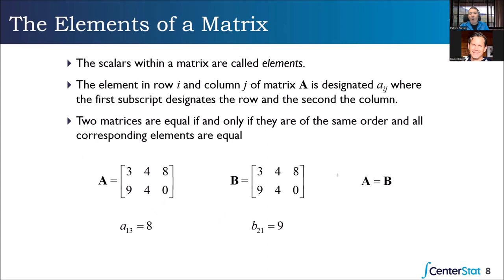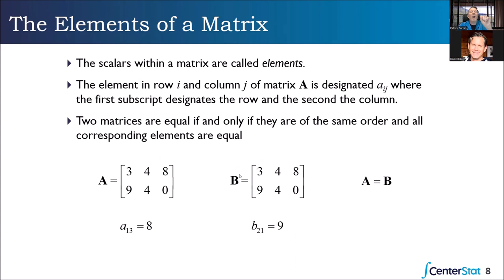Notice that A and B are actually equal to one another: the first one-one element is three, the one-two element is four, and so on for all the elements — they're identical. We can lay them on top of each other and all the scalars in the same positions within the matrix are the same. If even one element was off by a billionth of a point, then the matrices are not equal.